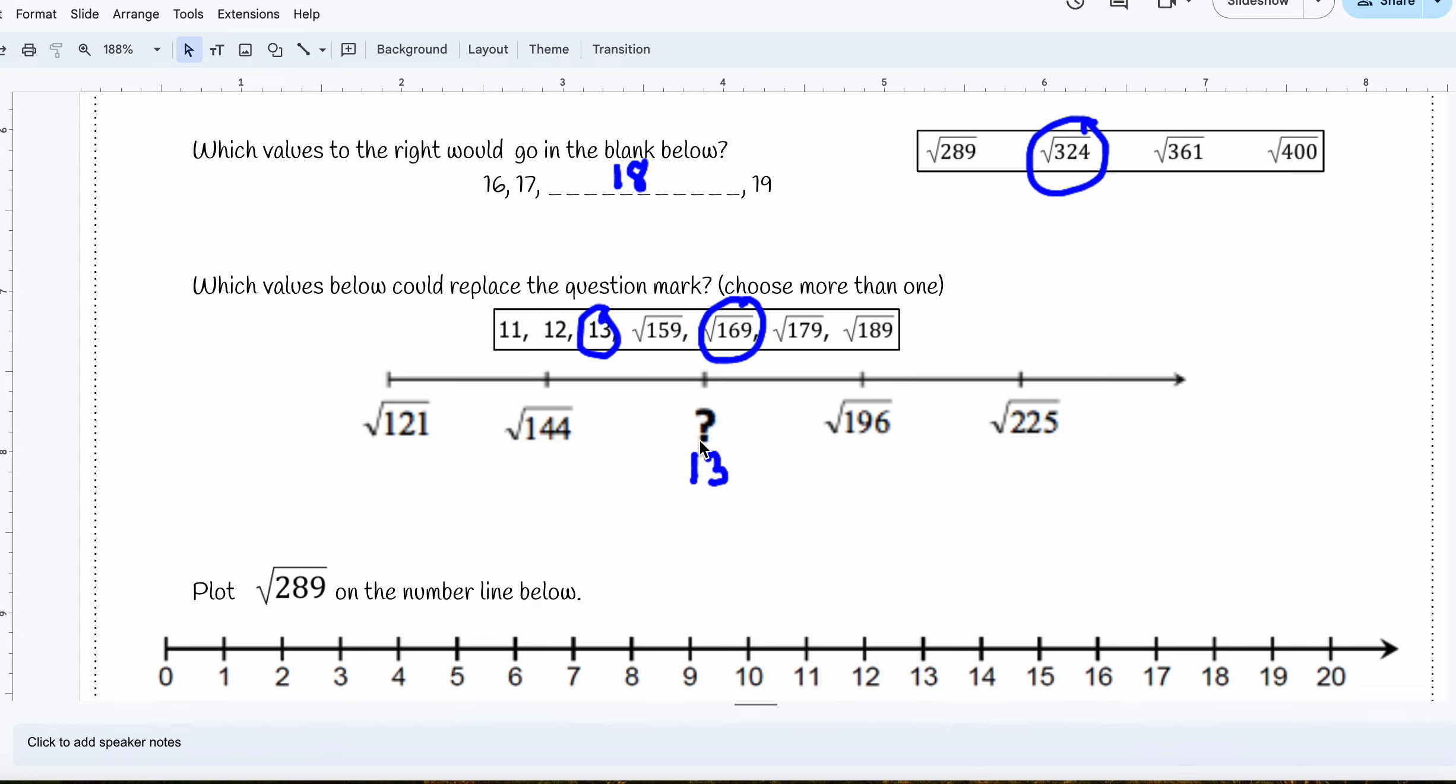Now, the trick doesn't help me so much here, because three times three is nine. So I know it ends in a nine, but this one does, and this one does. So that one, I actually have to know.